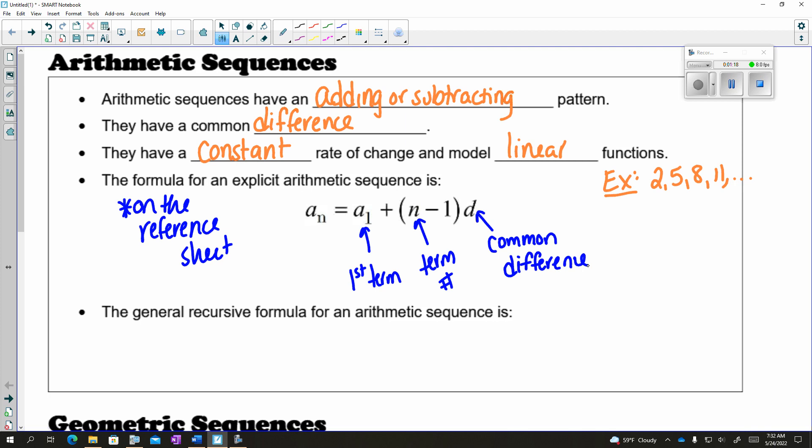If you don't know your common difference, you can find it by subtracting any two consecutive terms. So for example, you could see here that you're adding 3 every time. But if I didn't know that, I could do 11 minus 8 gives me 3, or 8 minus 5 gives me 3.